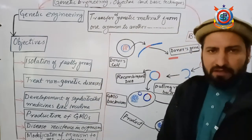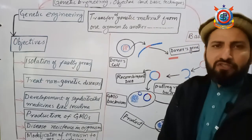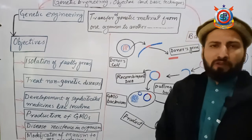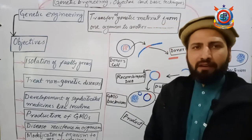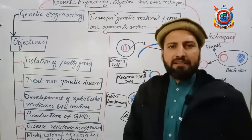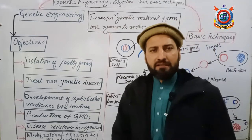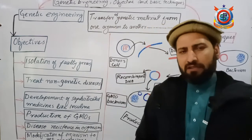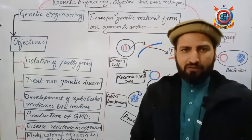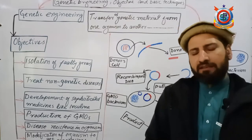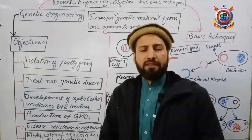There are six main objectives for which scientists perform genetic modification in organisms. The first objective is the isolation of faulty genes. Many organisms — including plants, animals, and humans — have genetic diseases caused by a faulty gene inside the body. That faulty gene produces disease in the body, and this disease cannot be treated by any other mechanism. So we treat such diseases through genetic engineering. The first step is for scientists to identify the faulty gene.